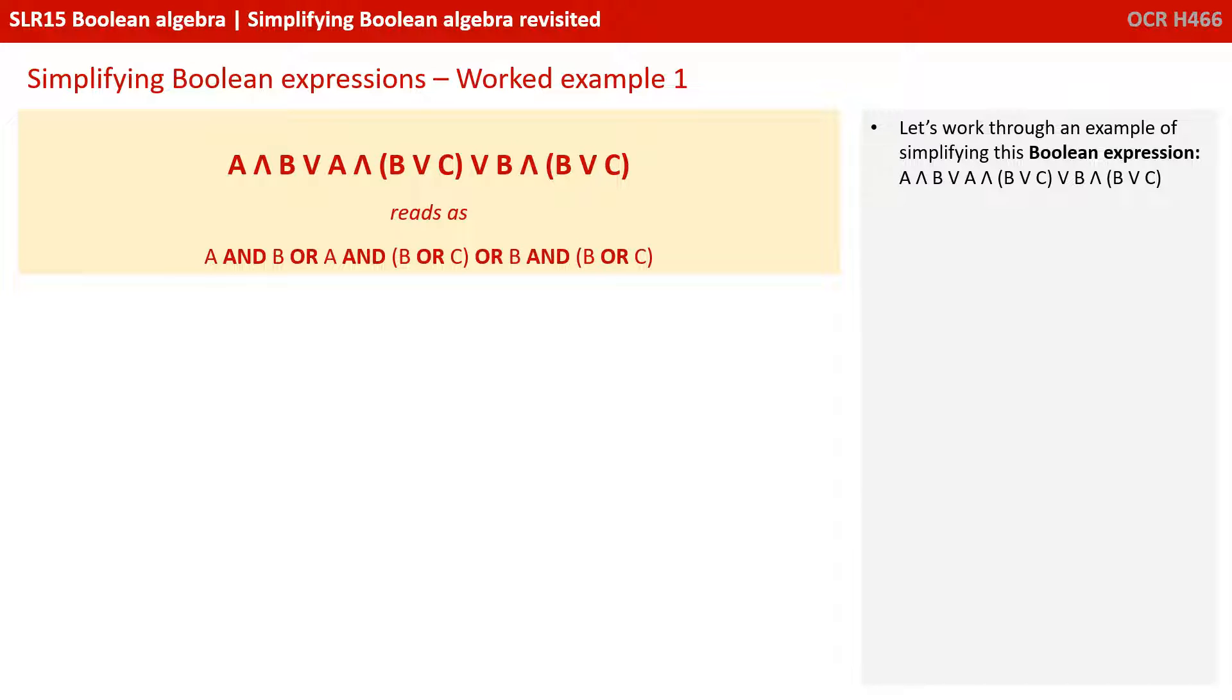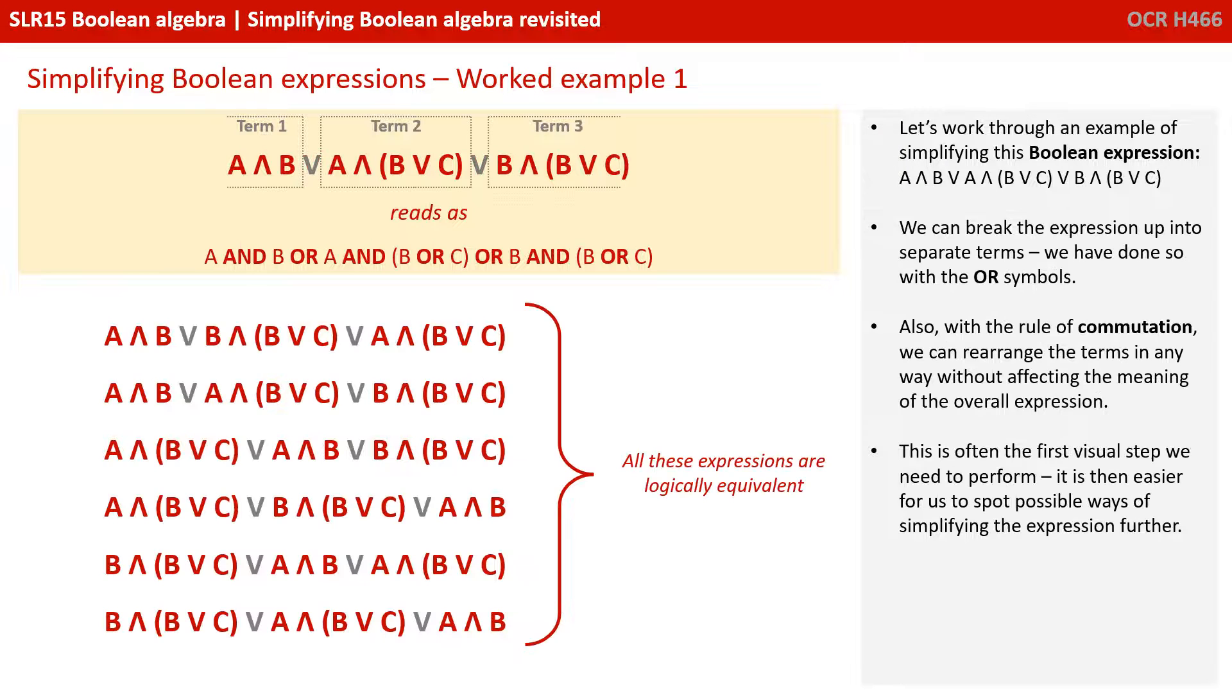Let's work through an example of simplifying this Boolean expression: A AND B OR A AND B OR C OR B AND B OR C. We can break the expression up into separate terms, separating them with the OR symbols. Also, with the rule of commutation we can rearrange the terms in any way without affecting the meaning of the overall term. This is often the first visual step you might need to perform. It can be easier for us then to spot possible ways of simplifying the expression further.